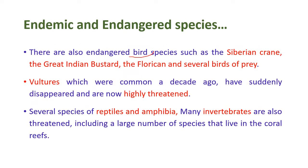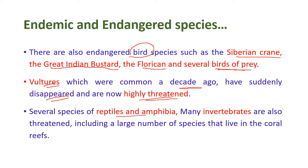There are also endangered bird species such as the Siberian crane, the Great Indian Bustard, the florican, and several other birds of prey. Vultures, which were very common decades ago, have now suddenly disappeared and are highly threatened. Several species of reptiles, amphibia, and many invertebrates are also threatened, including a large number of species that live in the coral reefs.